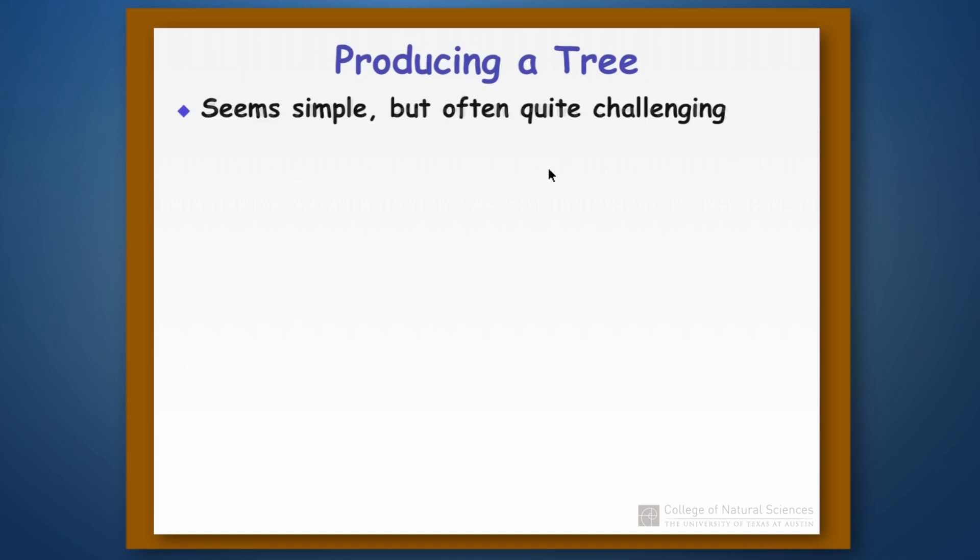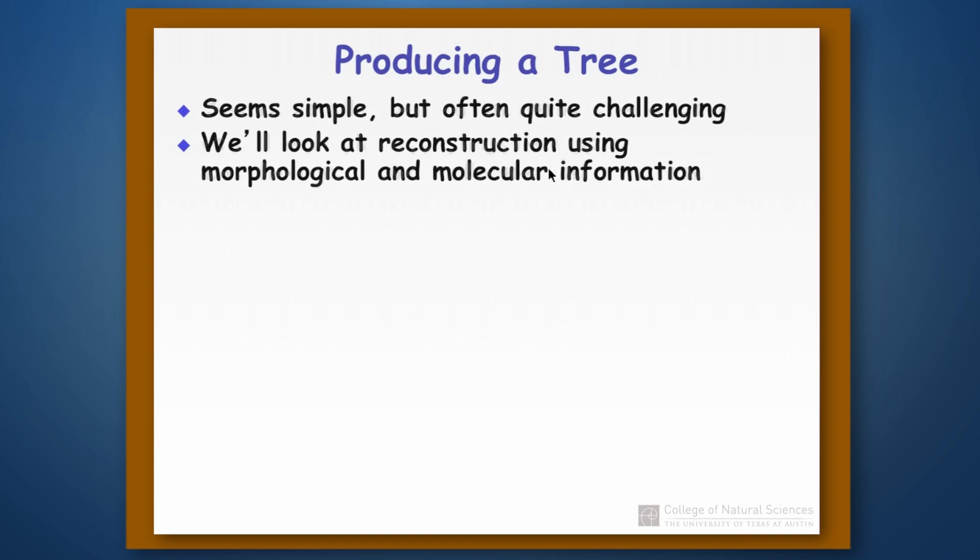Now producing a tree seems pretty simple but it's often really quite challenging. And we'll look at reconstruction using both morphological and molecular information. And this diagram is something we'll come back to over and over again because when we work through morphological features like along this pathway here, we're going to have to reconstruct the tree differently than if we're working with molecular features, and that is working along this pathway here.